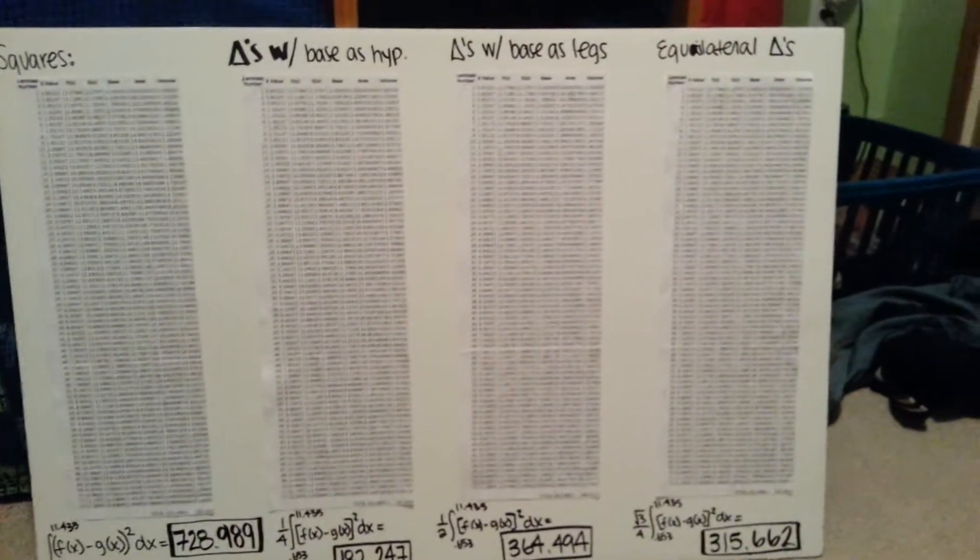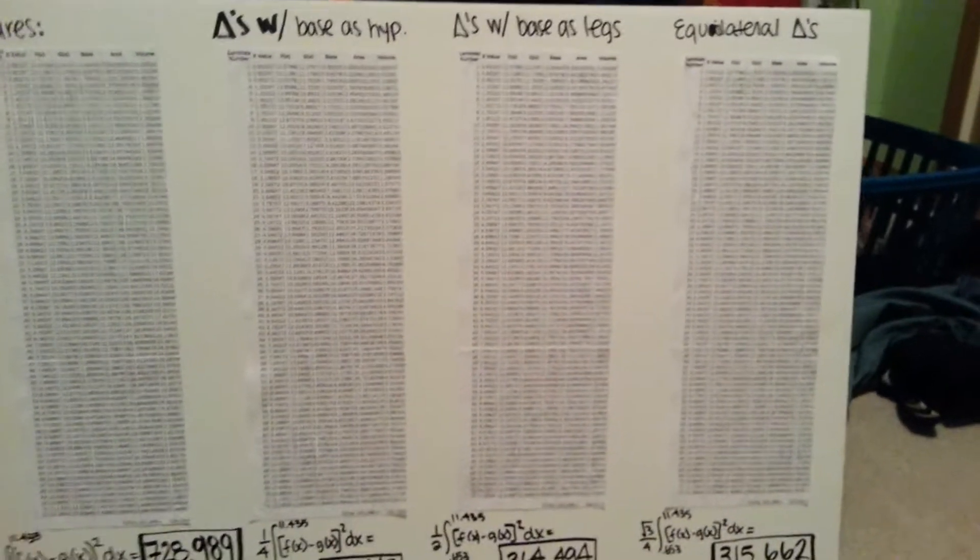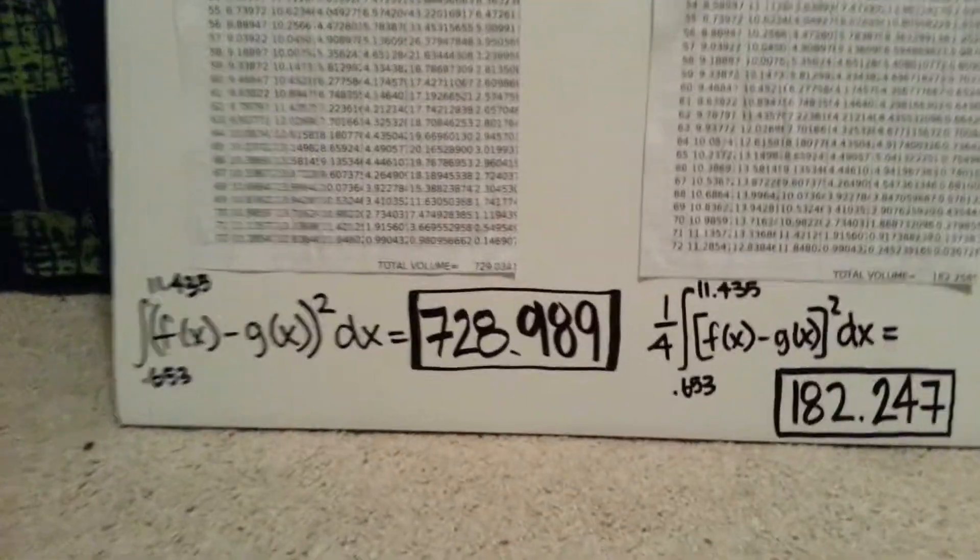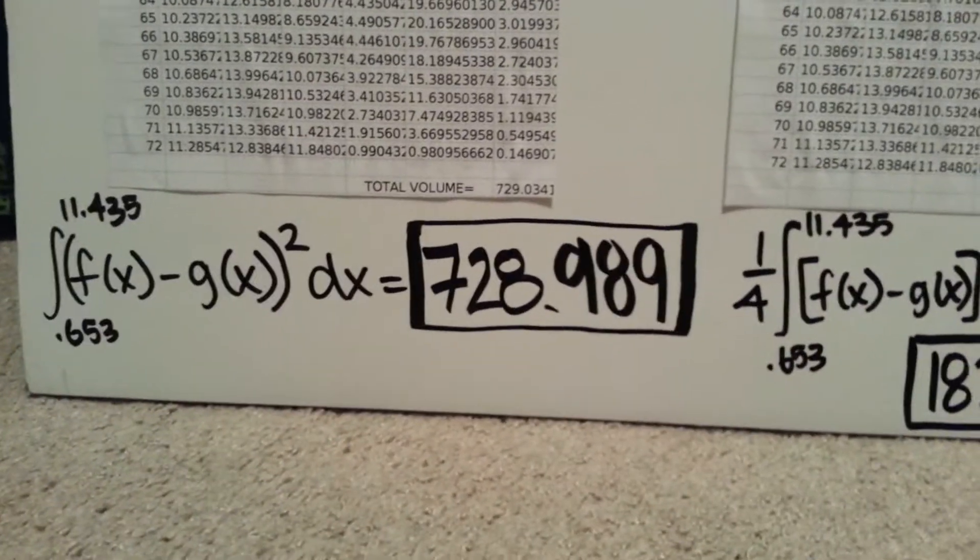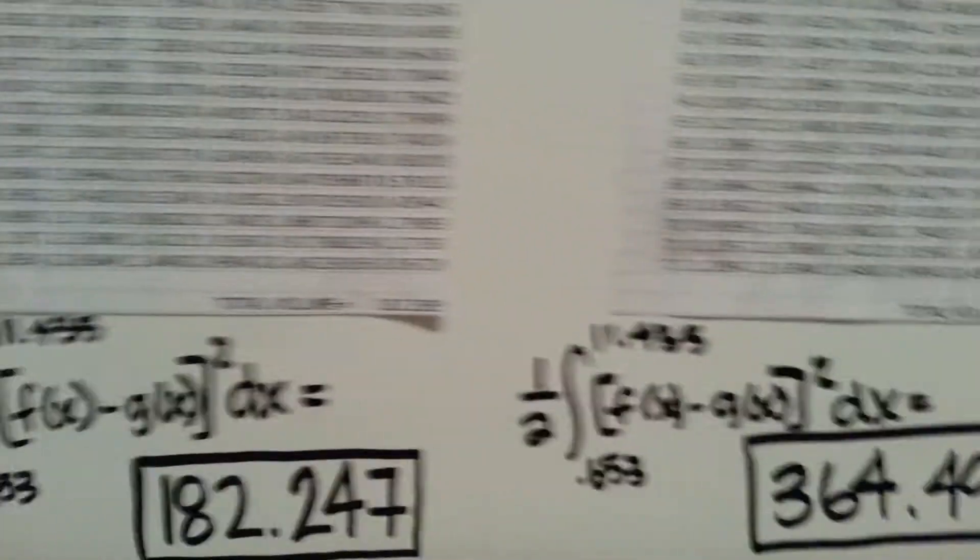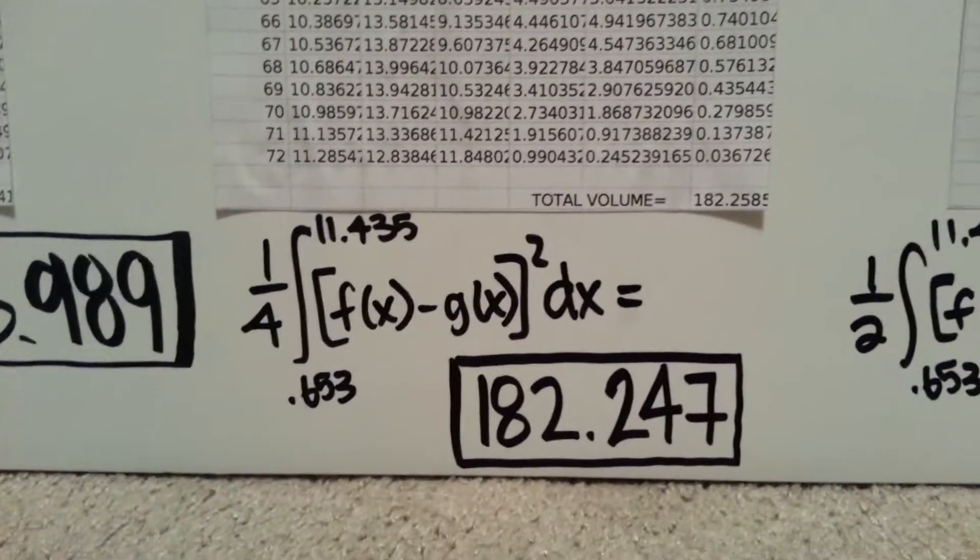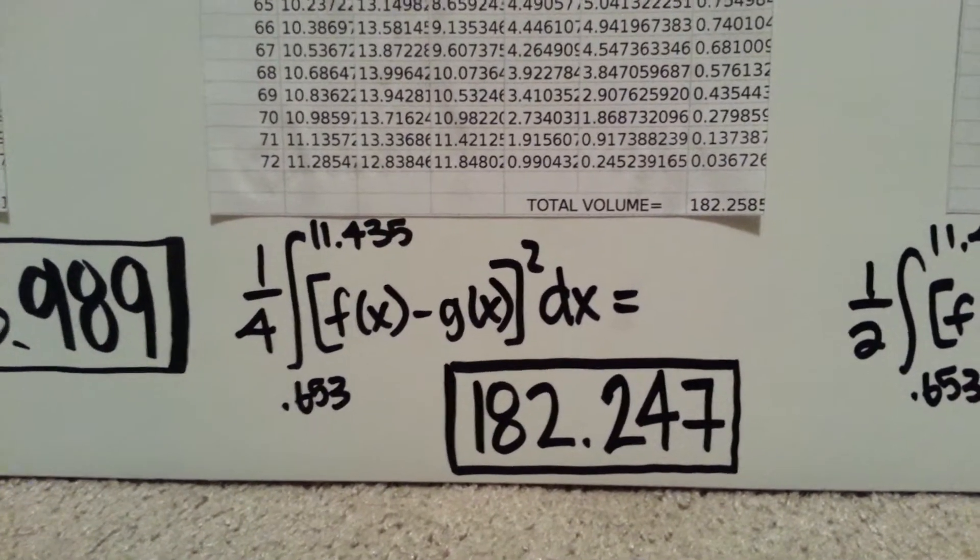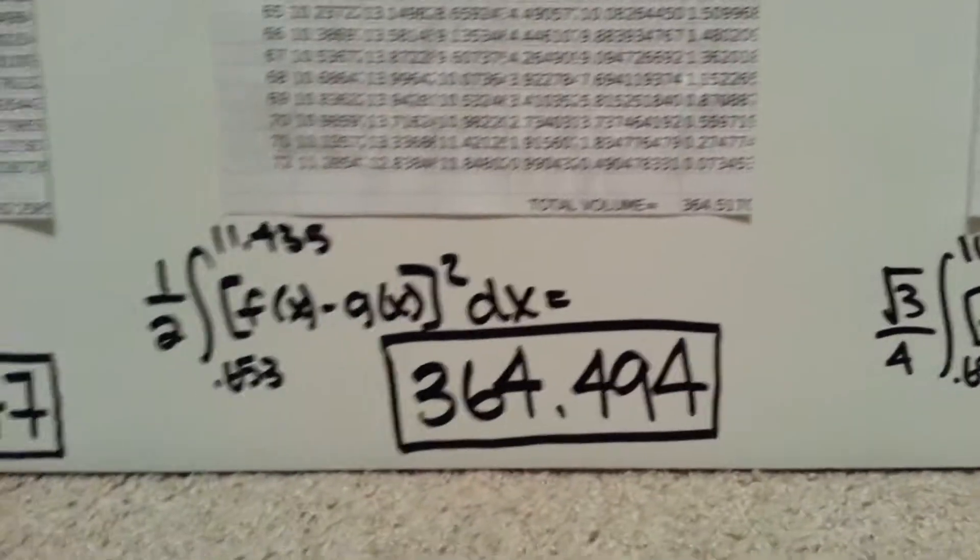Including my squares and my isosceles triangles and my equilateral triangles. But all the things that they had in common were that my actual volumes were pretty close to how much I had when I just added up the volumes of all my laminates.